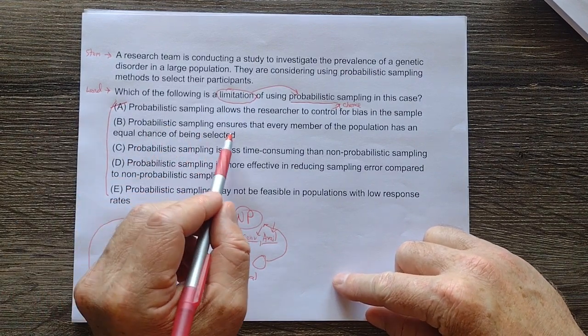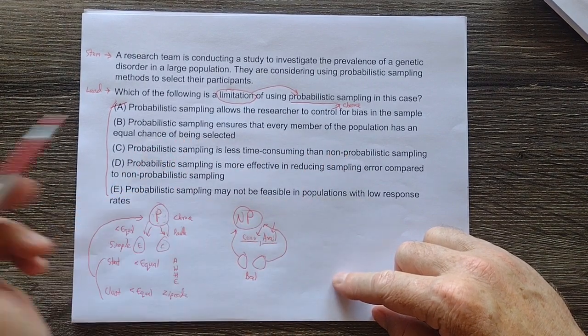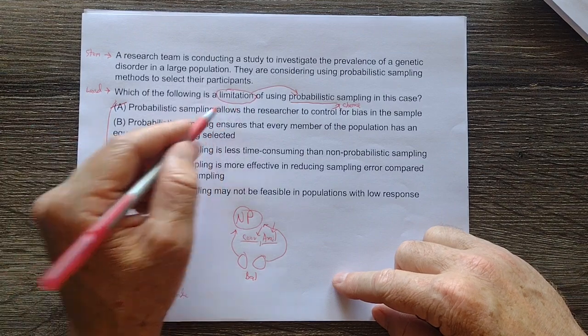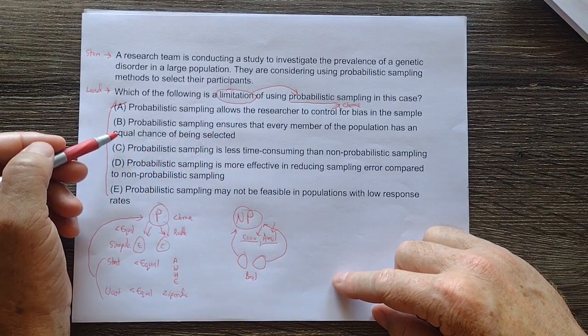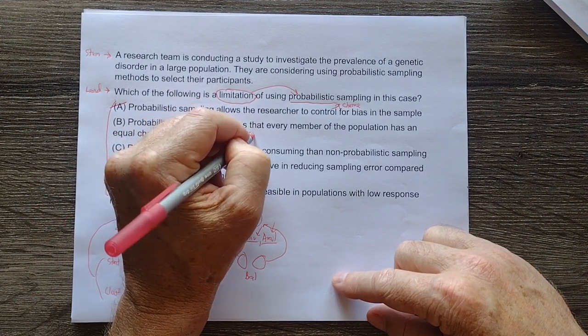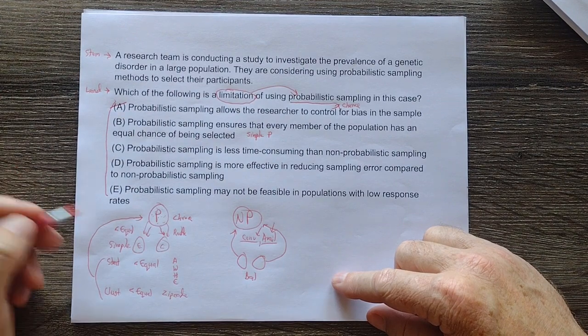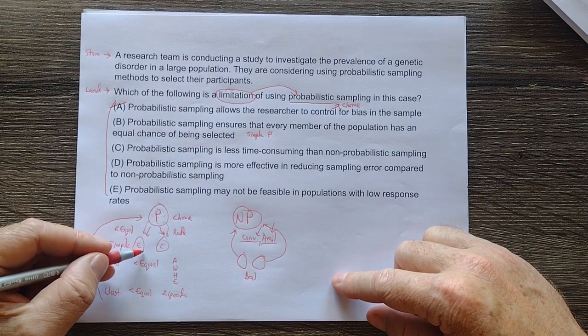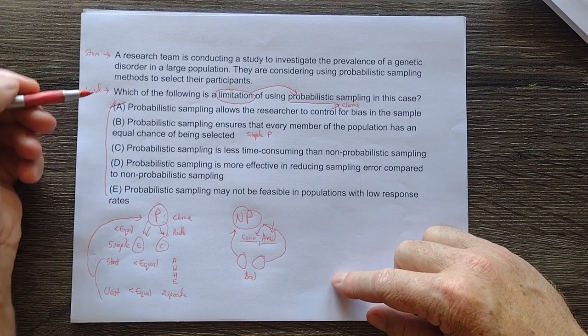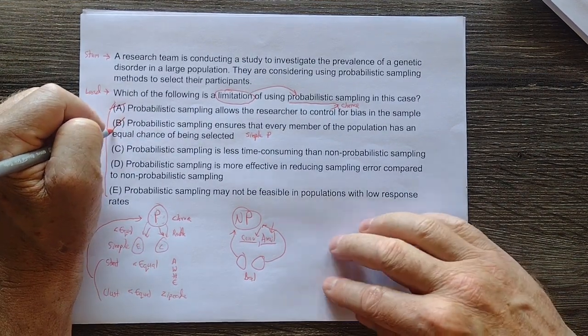So B, probabilistic sampling ensures that every member of the population has an equal chance of being selected. Is that a limitation? I don't think that's a limitation. I think that is a benefit. And this is really talking about simple probabilistic, right? So we talked about that 50% chance, equal chance of getting in here. So that is not a limitation. I think that's one of the benefits.